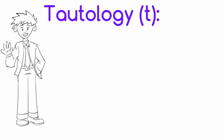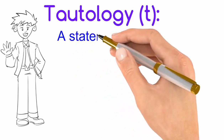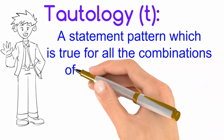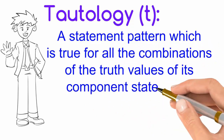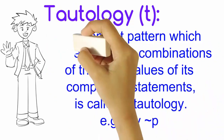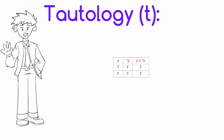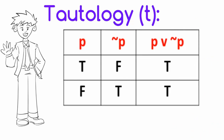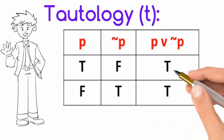First, we shall see tautology, denoted by small t. A statement pattern which is true for all the combinations of the truth values of its component statements is called tautology. For example, p or negation of p. We shall see the truth table of p or negation of p. We observe that the last column contains only T.